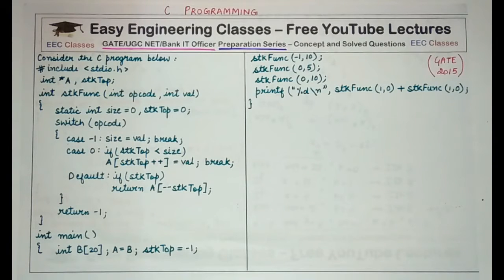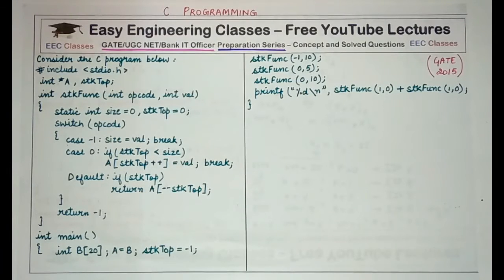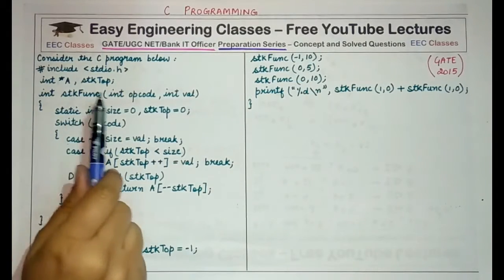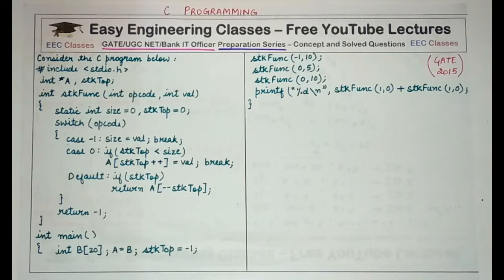Starting with the question of this lecture: consider the C program below. It includes stdio.h, declares a global int pointer 'a' and a global variable 'stk_top'. The stk function (stack function) is defined with two parameters: int opcode and int val. Inside, there are two static variables — static int size equal to 0 and static int stack_top equal to 0.